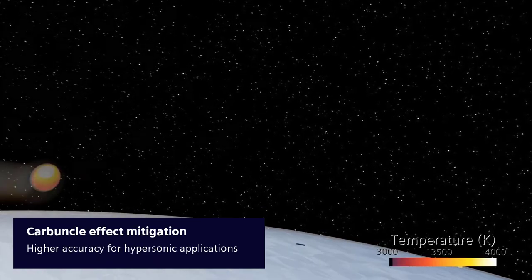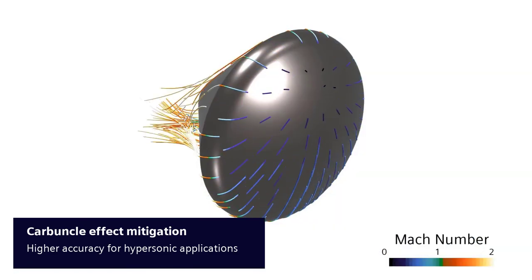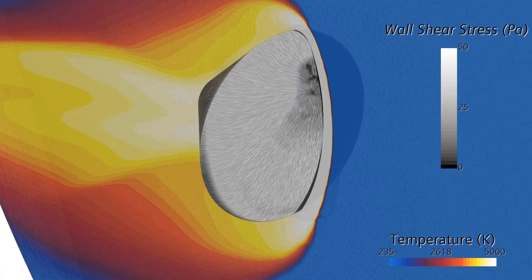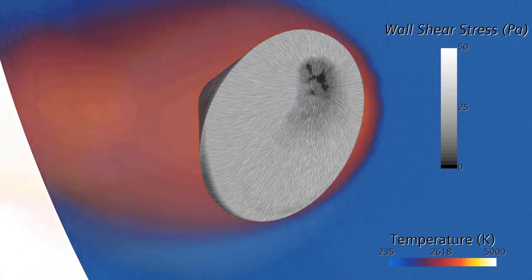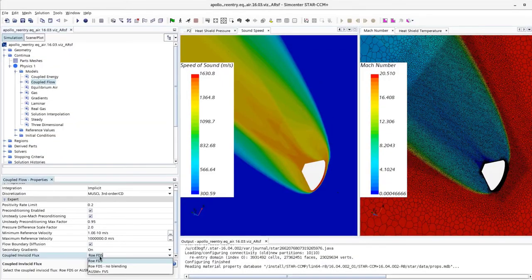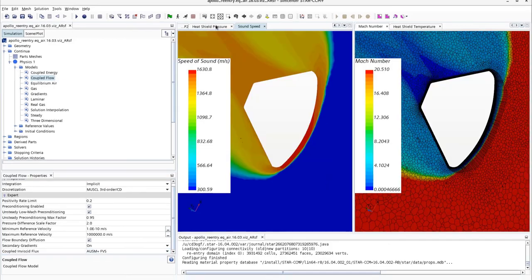Hypersonic vehicle design requires accurate prediction of bow shocks and surface heating, a challenge for CFD codes due to the carbuncle effect. Improvements in Simcenter Star CCM Plus 2021.2 mitigate this effect to deliver improved convergence and realistic temperature predictions, giving you higher confidence in your simulation results.